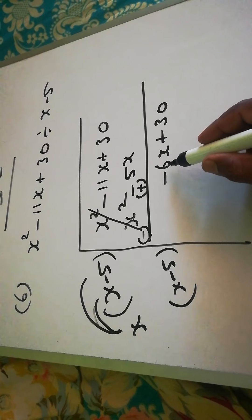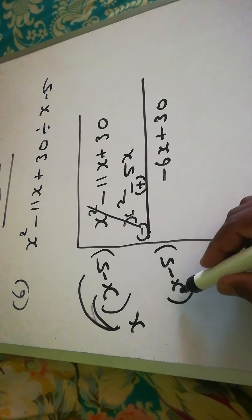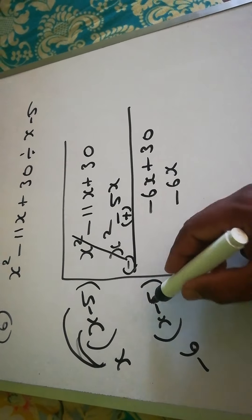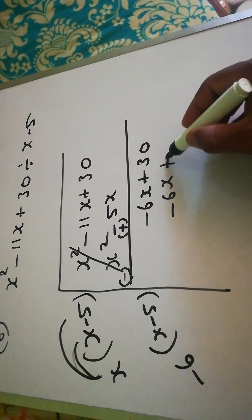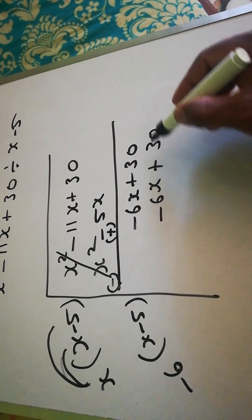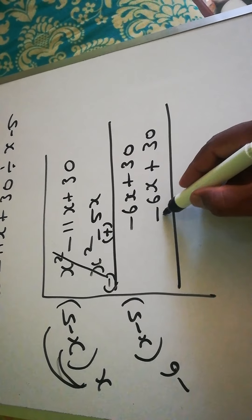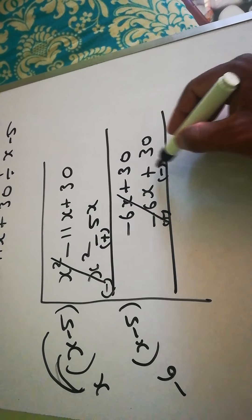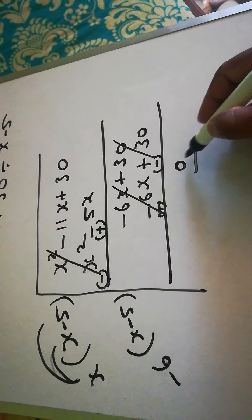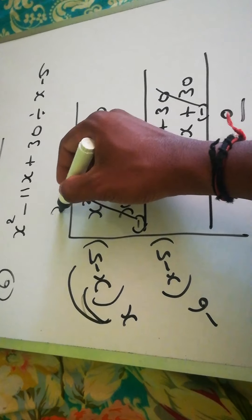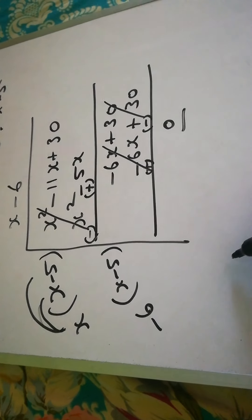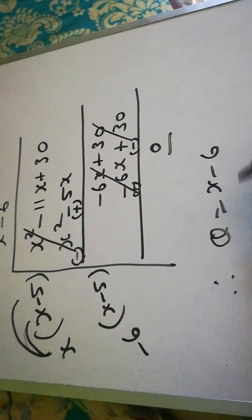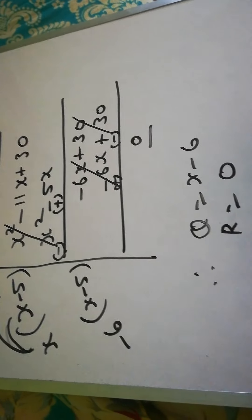Now to get -6x, we multiply by -6. So -6 times x is -6x, and -6 times -5 is +30. After changing signs, everything cancels and the remainder is 0. The answer on top is x - 6, so the quotient is x - 6 and the remainder is 0.